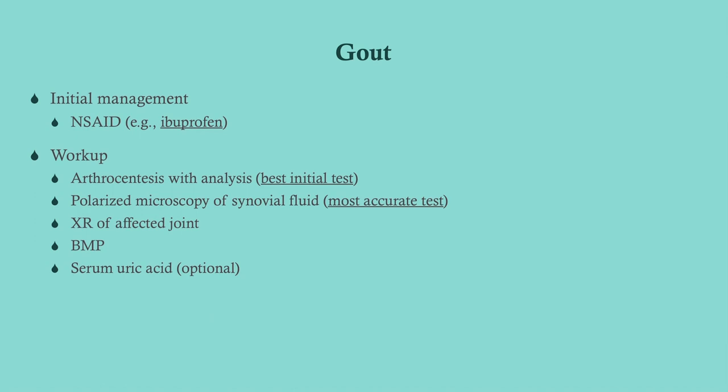Initial management: treat the pain first. On CCS, if you suspect gout, immediately give these patients an NSAID — ibuprofen, indomethacin, it doesn't matter, just give an NSAID. We do not give opiates; we give NSAIDs because the problem is inflammatory, not visceral pain. For the workup, the arthrocentesis is the best initial test, and include a polarized analysis to look for crystals. Get an x-ray of the affected joint, a BMP, and optionally a serum uric acid.